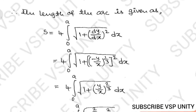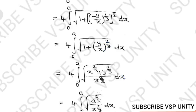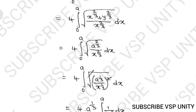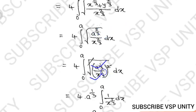Substituting dy/dx = −(y/x)^(1/3), squaring it gives (y/x)^(2/3) — the negative becomes positive. So 1 + (dy/dx)² = 1 + y^(2/3)/x^(2/3) = (x^(2/3) + y^(2/3))/x^(2/3). From the original equation, x^(2/3) + y^(2/3) = a^(2/3). So the expression under the root becomes a^(2/3)/x^(2/3) = (a/x)^(2/3), and its square root is (a^(1/3))/(x^(1/3)).